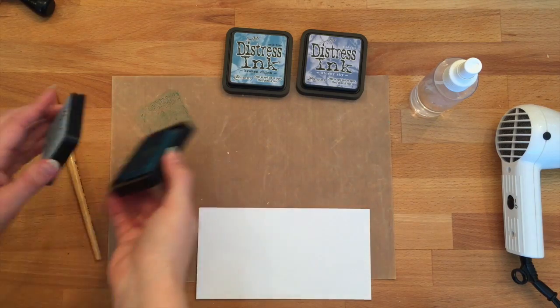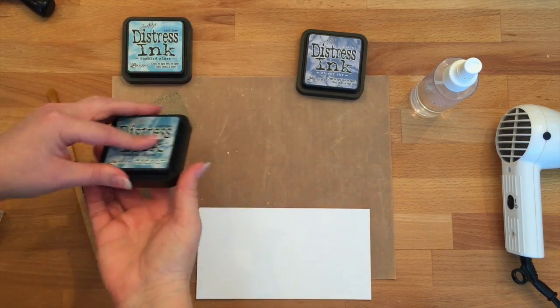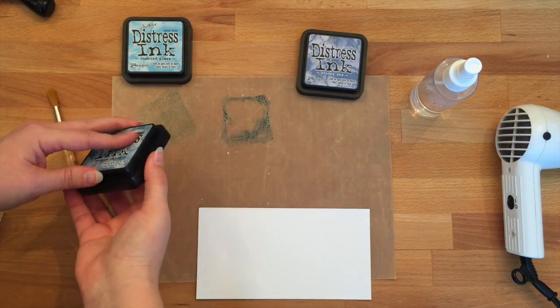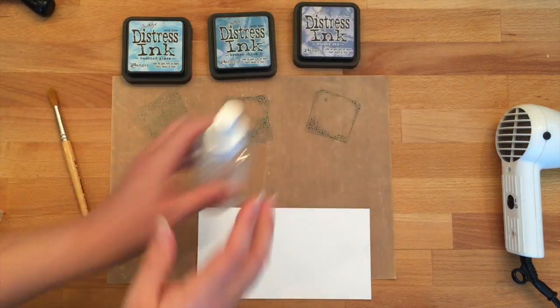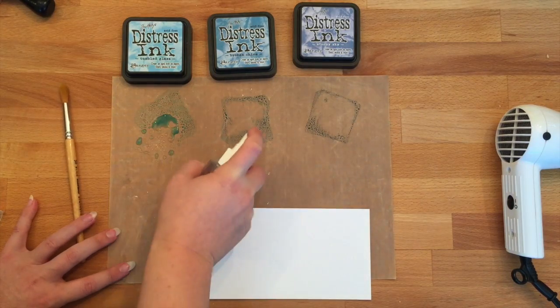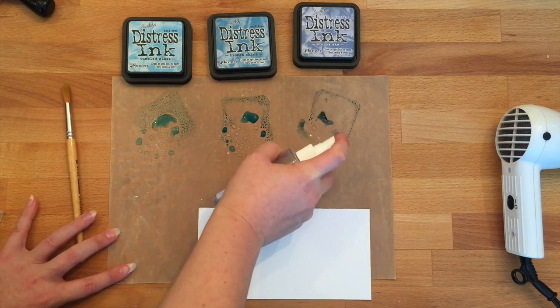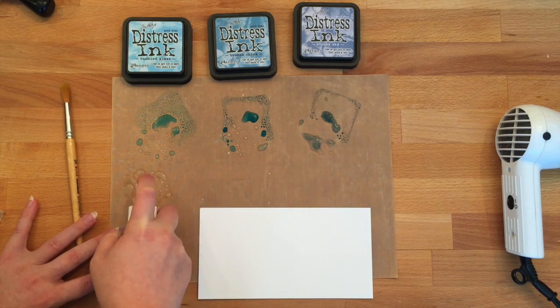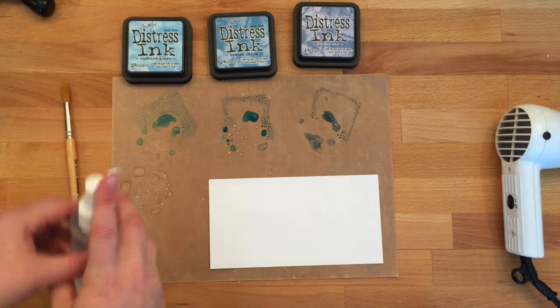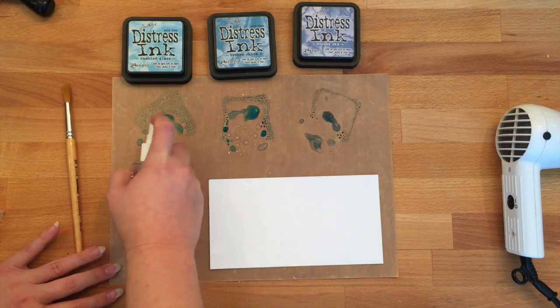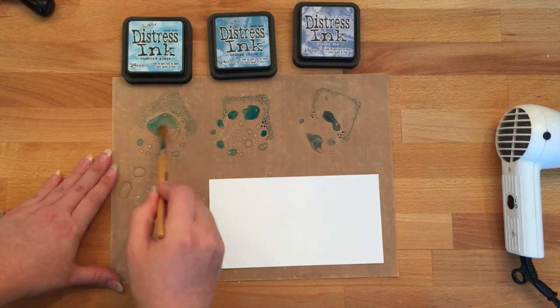For the next step, we're going to make the watercolor paper that's across the bottom of the card. For this, we're going to use three different distress inks: Tumbled Glass, Broken China, and Stormy Sky. Then we're going to smoosh them onto this Ranger craft non-stick craft sheet and spray water with the spray bottle onto those ink splotches.